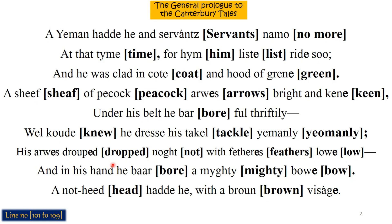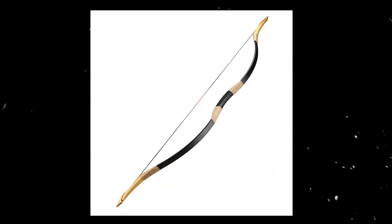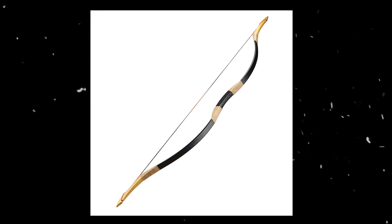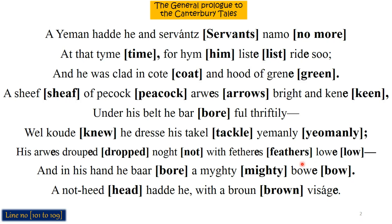In his hand was a mighty bow. 'Mighty' means big and powerful. Chaucer is talking about the bow, and now he says that in his hand there was a mighty, very good bow — big and beautiful.